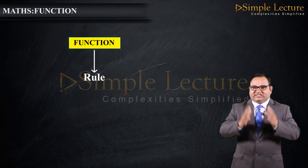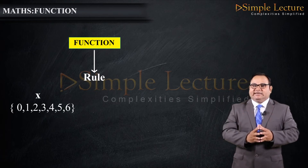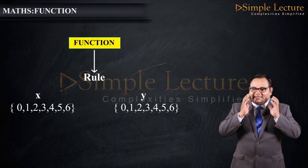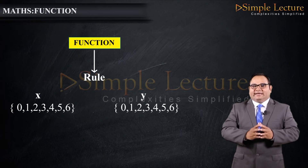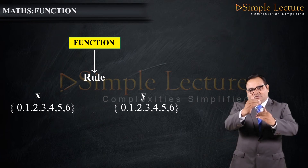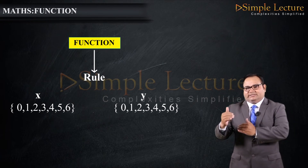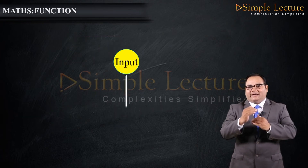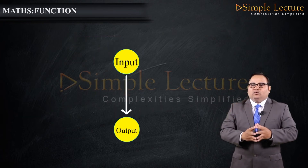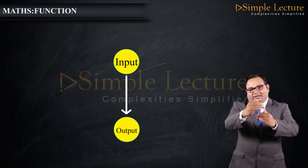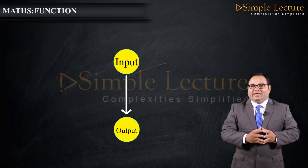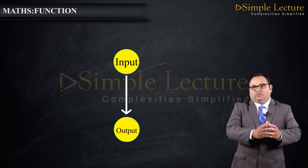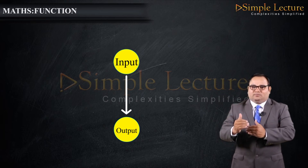Mathematically, a function is a rule or correspondence through which each element of set X is related to each element of set Y with a unique image. Every element of set X should have a unique image. We can have more than one input mapping to the same output, but for one input we cannot have two outputs.